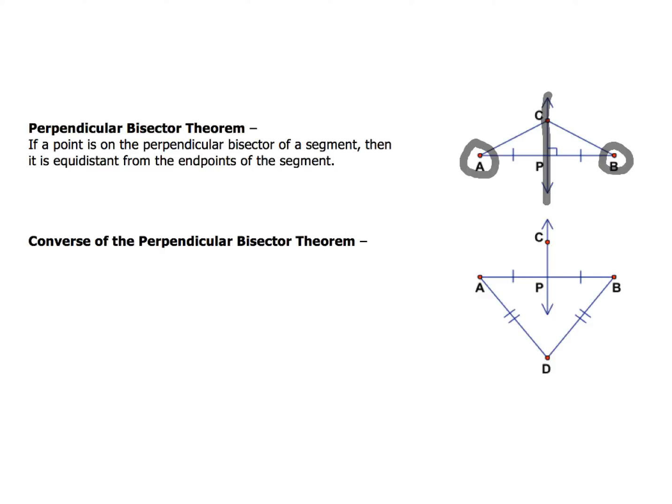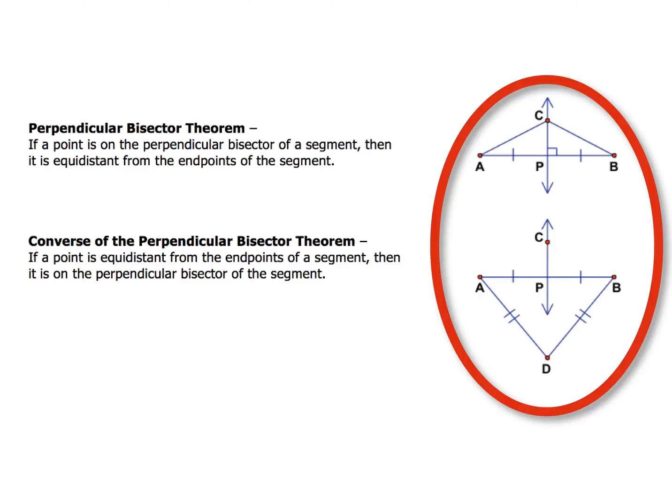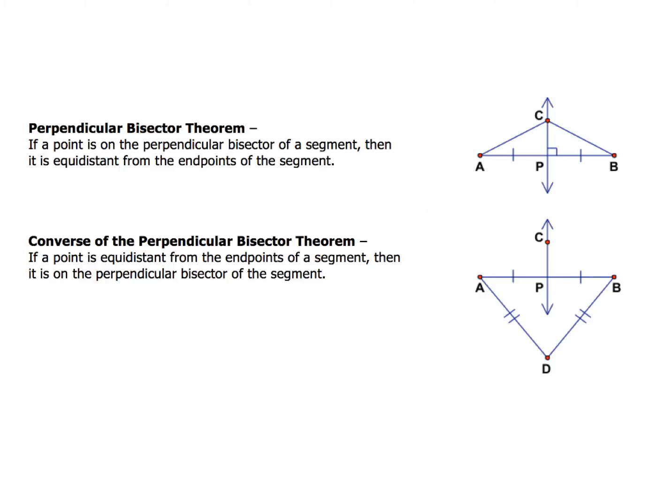Now the converse of that is also true. And if you remember from your logic laws, the converse just says you're going to take your hypothesis and conclusion and you're going to switch them. So the converse of the perpendicular bisector theorem just states if a point is equidistant from the endpoints of a segment, then it is on the perpendicular bisector of the segment. So again, if we take a look at our two pictures, that's what we'll be working with for each one of these. And it's pretty straightforward. The main thing you've got to be able to do is just apply these two theorems together. So let's go ahead and try an example of that.